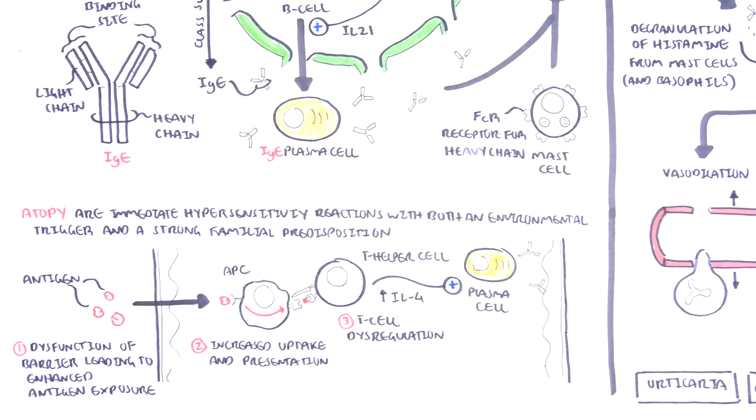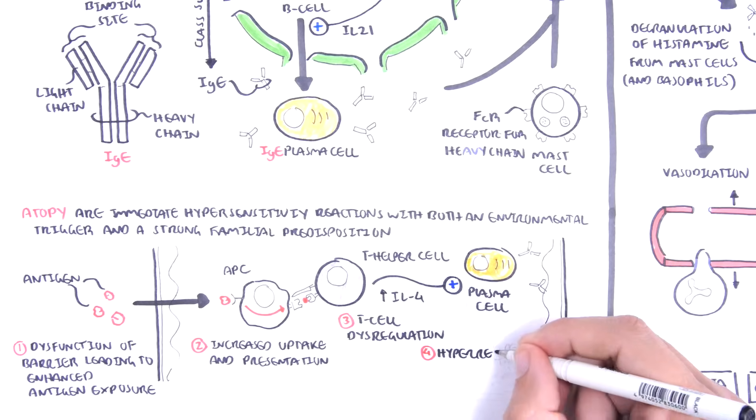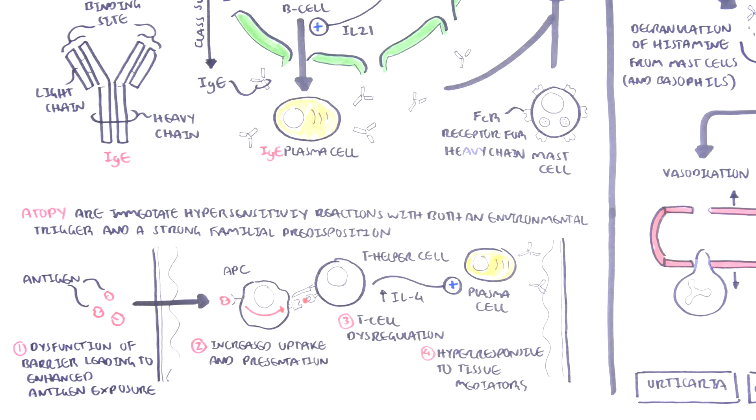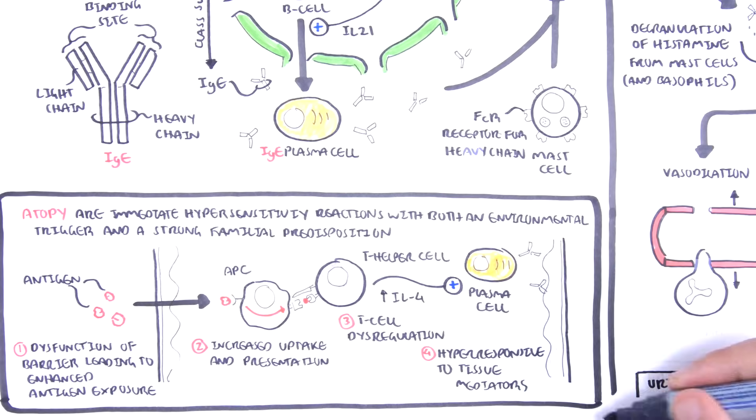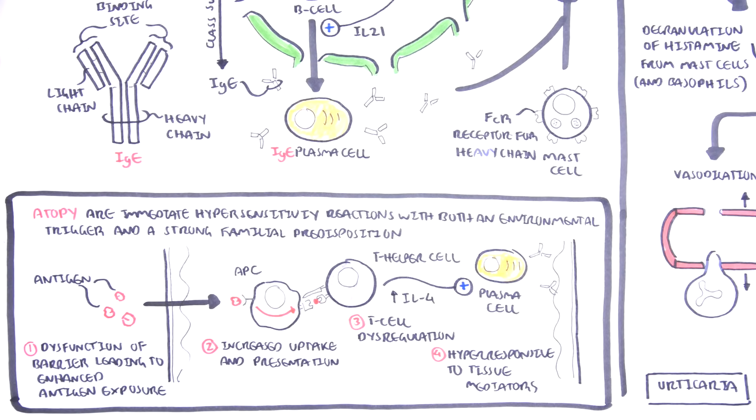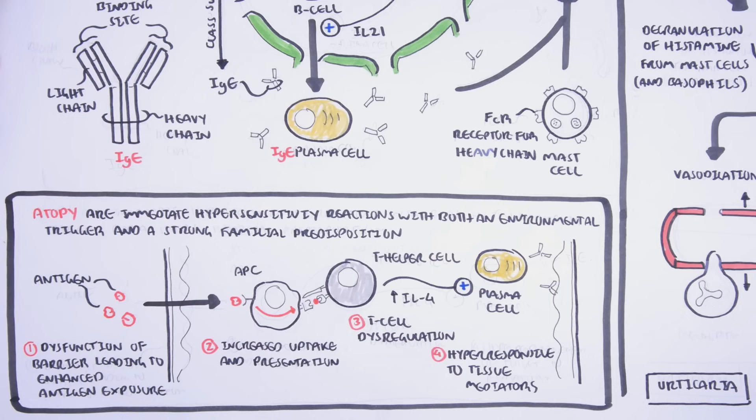And four, there can be hyper-responsiveness of target tissue to mediators and cytokines. And atopy is generally associated with elevated IgE and large number of T helper 2 cells.